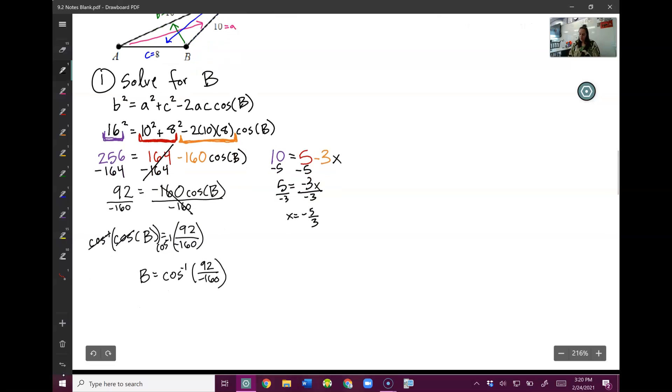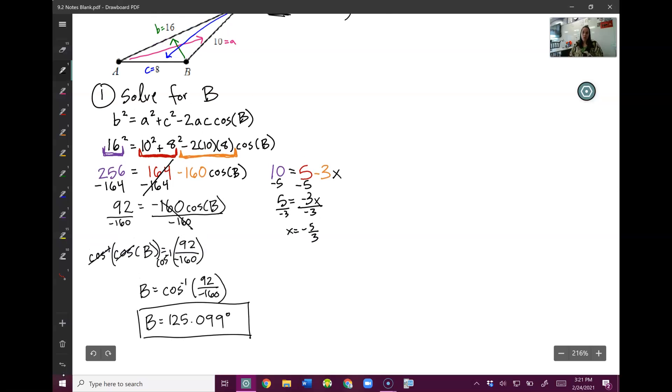Now be careful when you type this, that on that negative, you use the negative sign on your calculator, not the minus sign. They are usually different buttons. But when you type that in, you should end up with B equals 125.099. Make sure you have degrees, because this is a capital letter, so it's an angle. And there we go. That is the second version of the law of cosines.